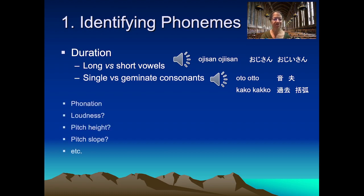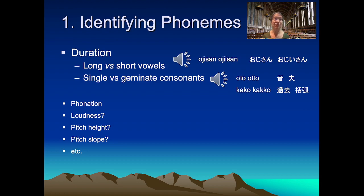Duration is one cue that distinguishes phonemes. Some languages also use phonation — specifically voice quality — so contrasts between breathy, creaky, and modal voicing can distinguish phonemes, though that's relatively infrequent in the world's languages. Loudness and pitch height are very sensitive to microprosodic variation, so they wouldn't be very reliable phoneme cues. And it can be difficult to express a full pitch slope on something as small as a single phoneme.